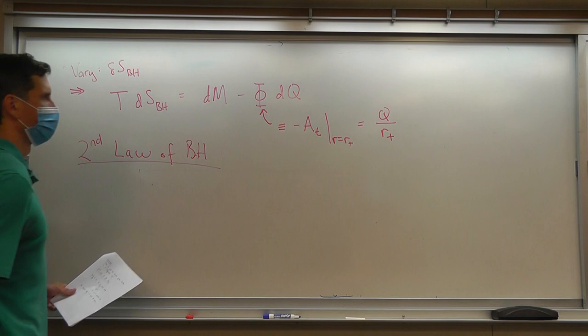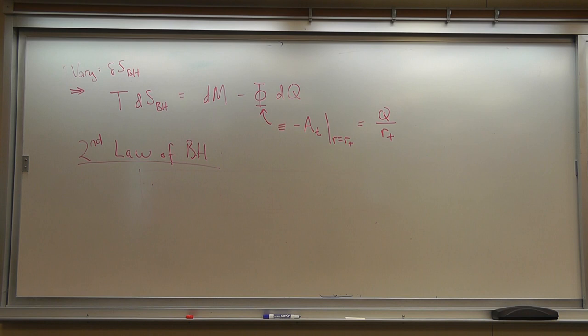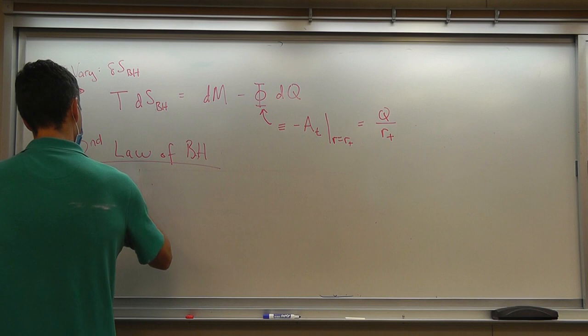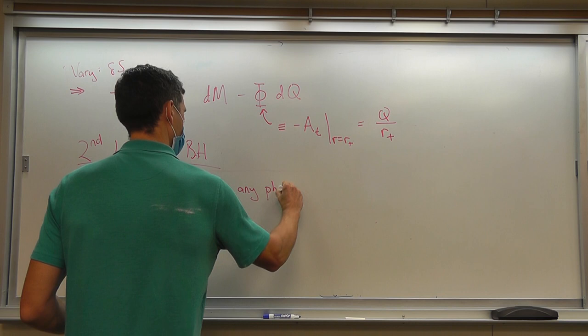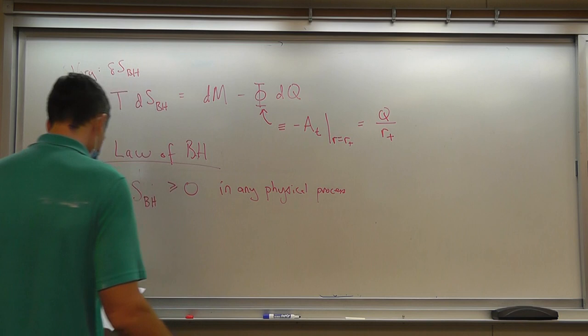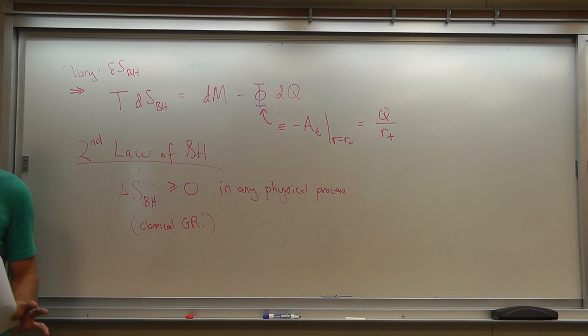So when you say he assumed this equation, he assumed the Bekenstein-Hawking form of the entropy as well? Yes. So that's the first law. Now things start really getting interesting because black holes also obey a second law, which says that the Bekenstein-Hawking entropy must increase in any physical process. This is a statement about classical solutions of the Einstein equation. It's not quite true once we include other kinds of effects: matter, quantum effects, et cetera.